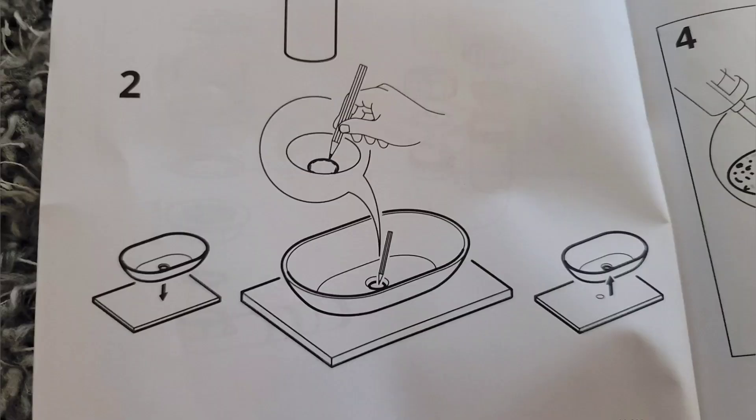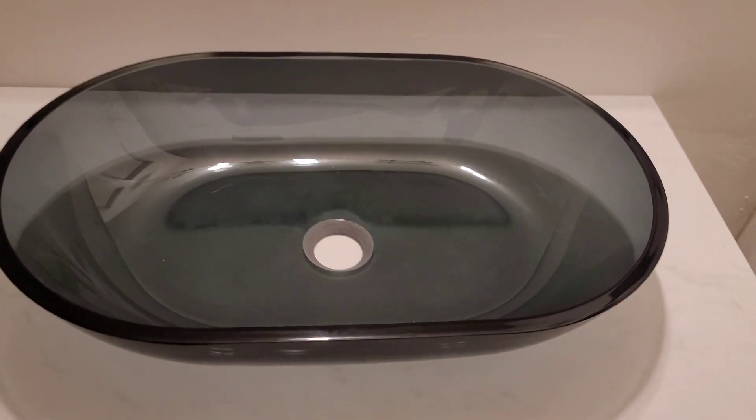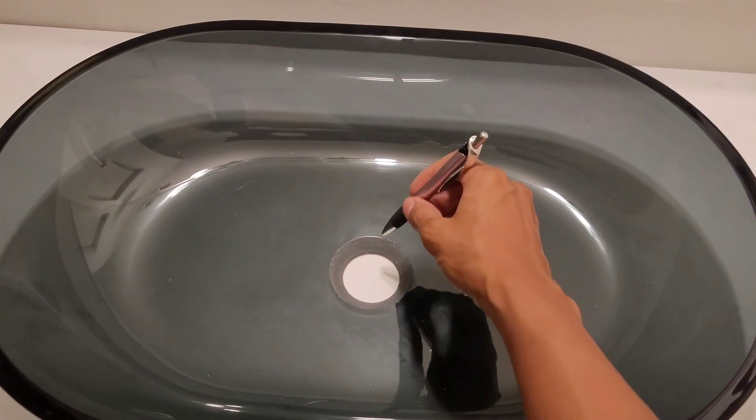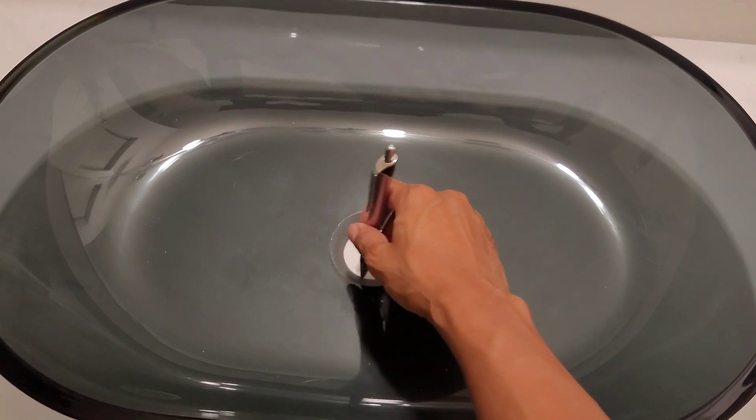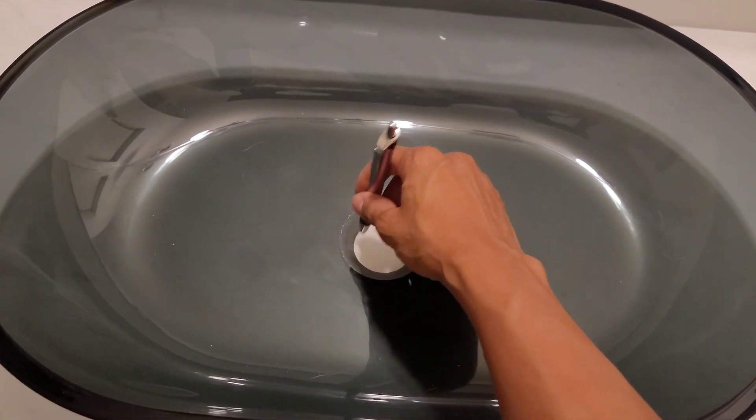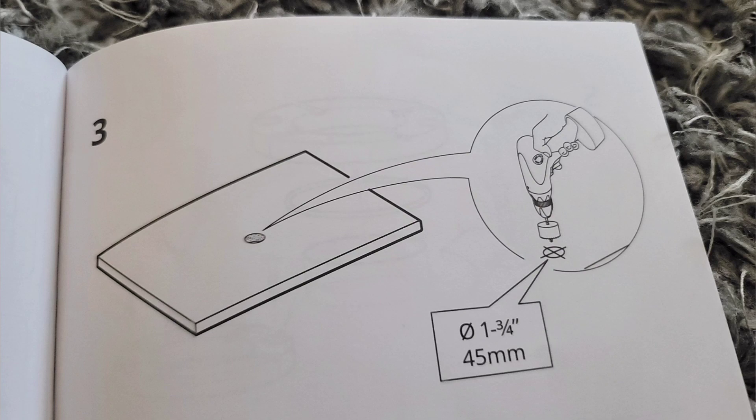Step two is just making sure that you draw out the hole for the placement. You want your sink to lay over the countertop. Also, by the way, I was running out of storage on my phone, so most of these images will just be pictures, not videos.